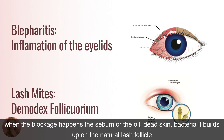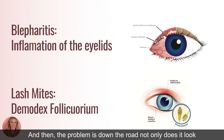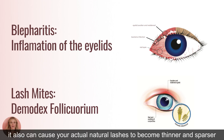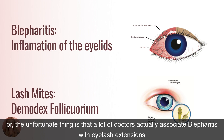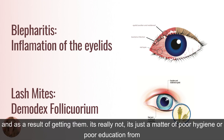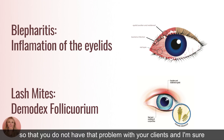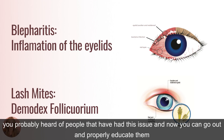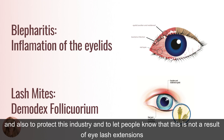Blepharitis occurs because there's a blocked follicle — blocked from the buildup and bacteria. The sebum, oil, and dead skin bacteria build up on the natural lash follicle, and without treatment the hair follicle itself becomes inflamed. Down the road, this can cause your natural lashes to become thinner and sparser, and it can be painful. Unfortunately, many doctors associate blepharitis with eyelash extensions, but it's really just a matter of poor hygiene or poor education from the technician to the client on how to clean and properly care for their lashes.